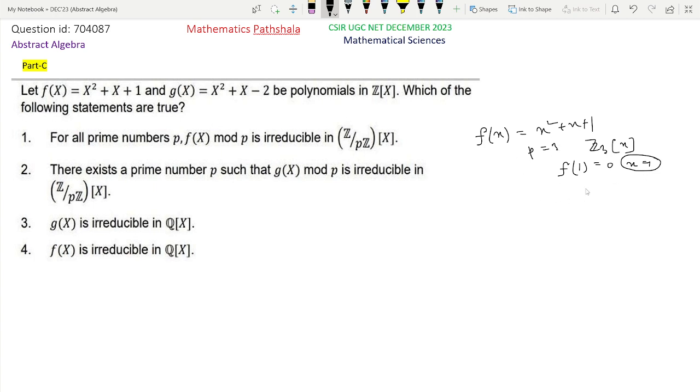As this polynomial has a root in Z₃[x], it is not irreducible in Z₃[x]. This statement that for all prime numbers p, f(x) mod p is irreducible is not true, because when p = 3, that is in Z₃[x], f is not irreducible. So option 1 is not the correct option.